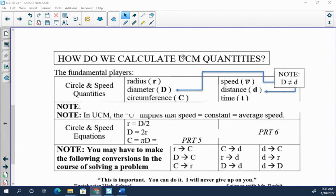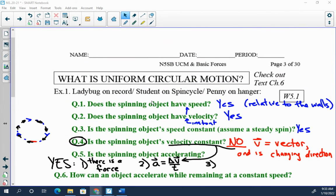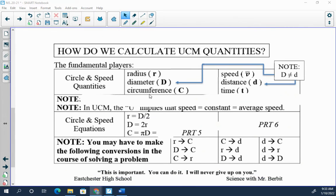So let's do that real quick. How do we calculate UCM - uniform circular motion - quantities? Up here, uniform circular motion is the name of the game this unit. So the players, I'm going to learn the game soon, but here are the players. Just as a reminder, very easy because you've done this.